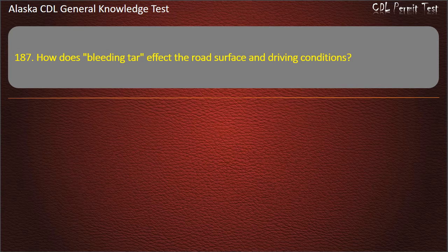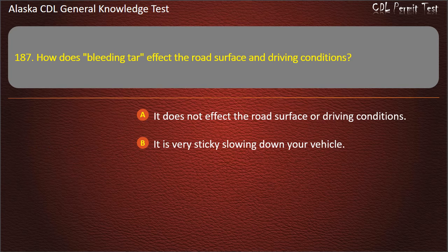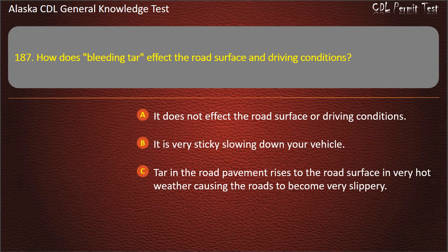Question 187. How does bleeding tar affect the road surface and driving conditions? It does not affect road surface or driving conditions; it is very sticky slowing down your vehicle; or tar in the road pavement rises to the surface in very hot weather causing roads to become very slippery. Answer: Tar rises to the road surface in very hot weather causing roads to become very slippery.